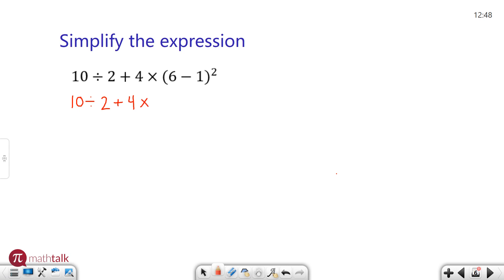So I have 10 divided by 2 plus 4 times. So this I actually need to do 6 minus 1 which is 5 and squared. Okay, now I left the parentheses there just because I wanted to keep it there. You don't have to include parentheses but it is there.